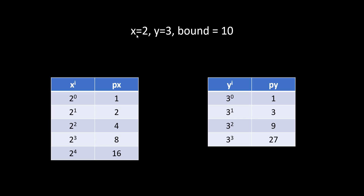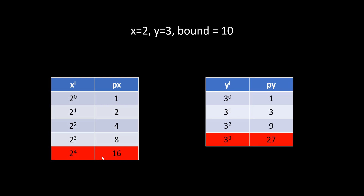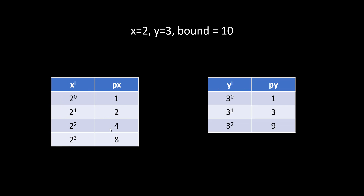Taking the same example of x equal to 2 and y equal to 3 with bound equal to 10, we now take the powers of 2 raised to 0, 1, 2, 3, and 4, and we can see the values for those powers. Similarly with 3. Till what point do we continue? We would not include something that goes beyond the bound for powers. So we cannot consider 2 raised to 4 and 3 raised to 3. After we have these values, we need to find the combination of both — that is, the addition of 2 raised to 0 with all the values in y's powers.